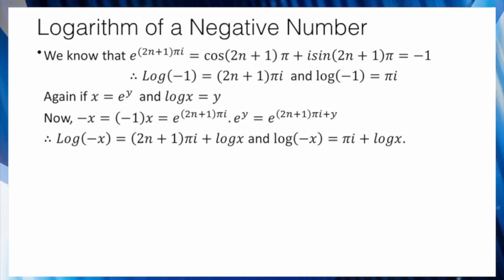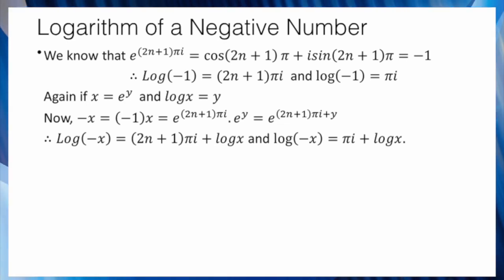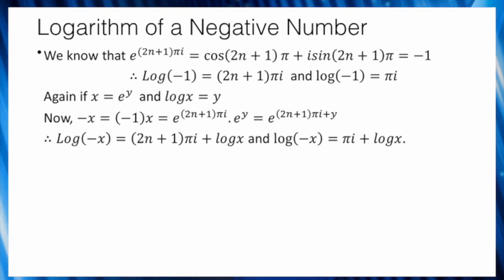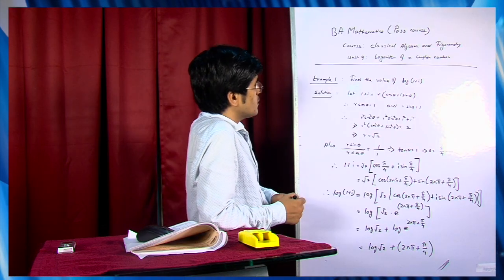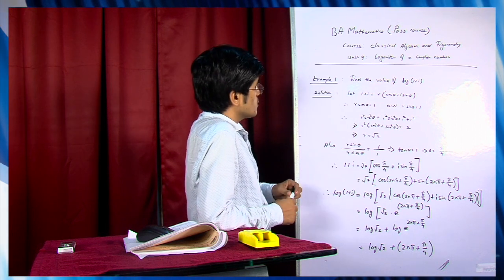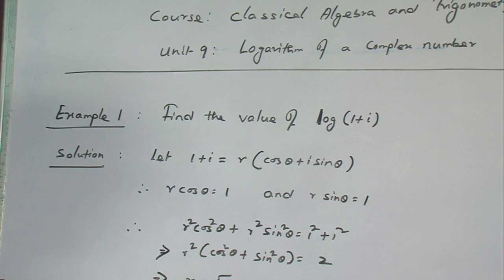Now, log(−1) is equal to πi. If x equal to e to the power y, then log x equal to y. So minus 1 equal to e to the power (2n+1)πi. Therefore log(−x) equal to (2n+1)πi plus log(x), and the principal value: log(−x) equal to πi plus log(x). This gives us the logarithm of a negative number. Note that log x equal to 1 plus i, so 1 plus i is the logarithm of a negative number.